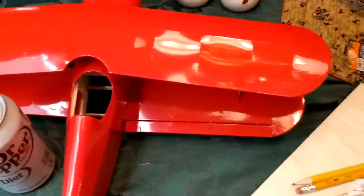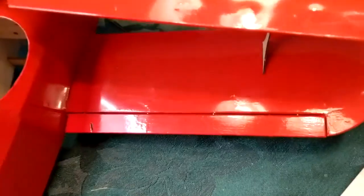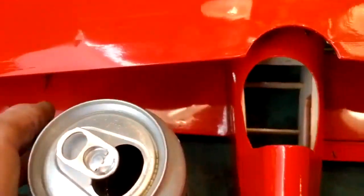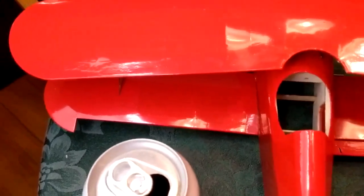We are at the stage of hinging the control surfaces. The right aileron has already been hinged with fishing line. You may be able to make out the four little bits of fishing line that have hinged that. And I'm going to go through the process with you of hinging the left aileron.